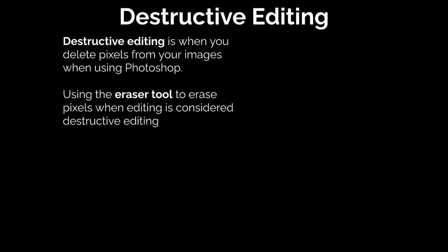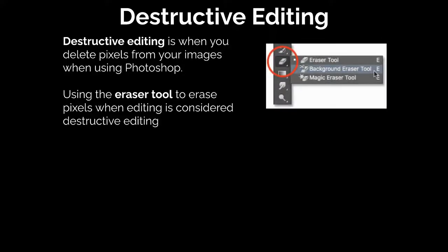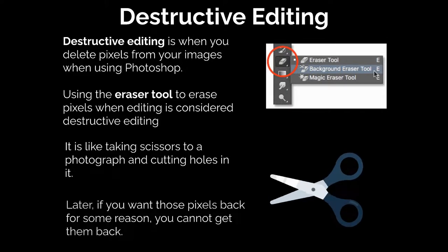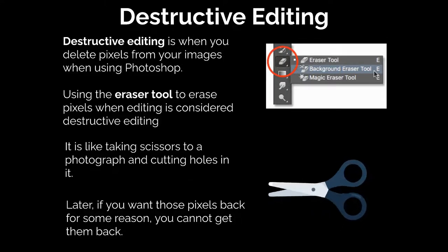Destructive editing is when you delete pixels from your images when using Photoshop or Photopea.com. Using the eraser tool to erase pixels when editing is considered destructive editing, because we are eliminating and deleting pixels altogether. The eraser tool looks a little different in Photopea.com, but in general you'll see that cube that looks like an eraser. Imagine taking scissors to a photograph and cutting holes in it — you're actually stripping the image of parts and pieces. Later, if you wanted to replace those pixels, you won't be able to because you've deleted them.